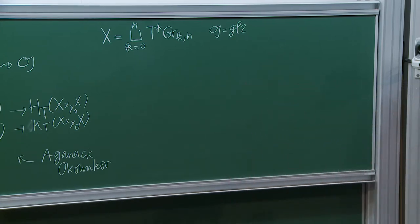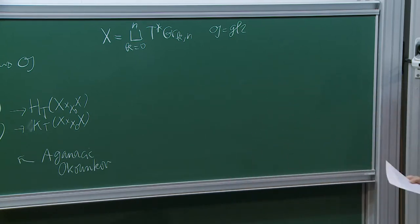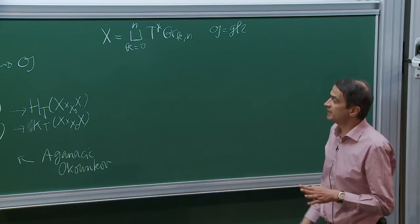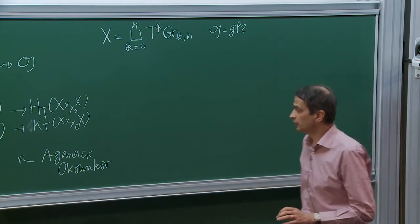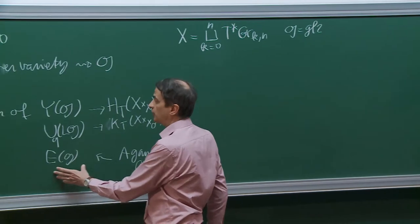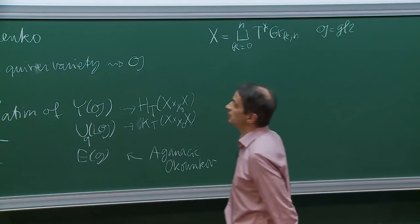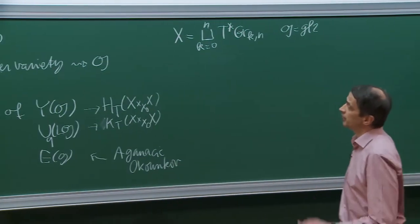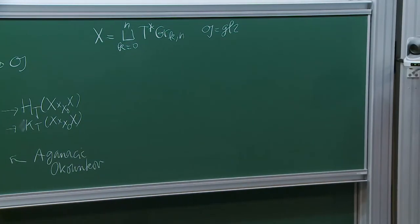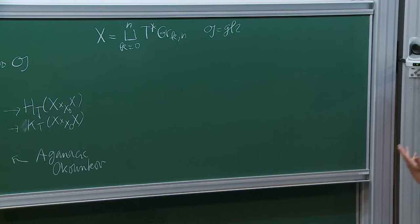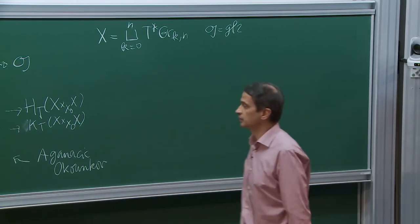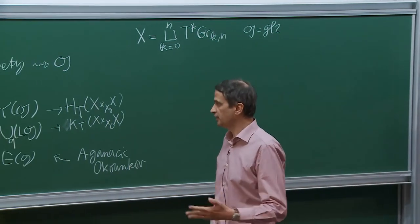Let me say something about the elliptic quantum group — very few words — and then I will explain some old construction of ours, which is the construction of weight functions. Maulik and Okounkov introduced the notion of stable envelope, which is a map from the equivariant cohomology of the fixed point set to the equivariant cohomology of X, which obeys some kind of triangularity property.